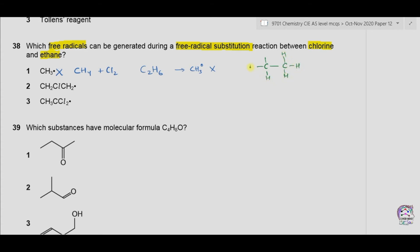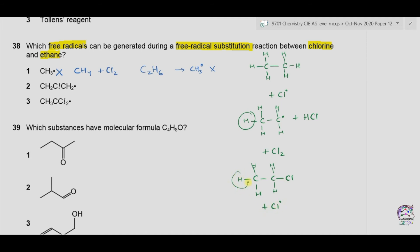Option 2 is the CH2ClCH2• radical. Ethane has six hydrogens, and a hydrogen can be removed by a chlorine radical to form a radical on carbon along with HCl. That carbon radical can react with a chlorine molecule to form the chloride product CH2ClCH2Cl. This product matches option 2, so option 2 is correct.